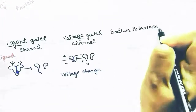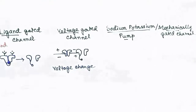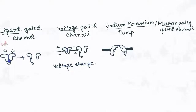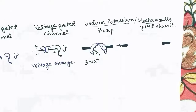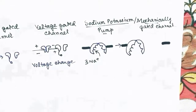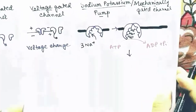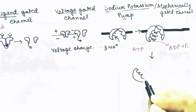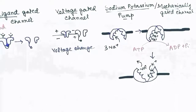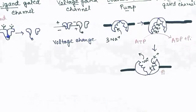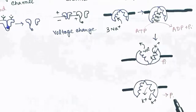The sodium-potassium pump, or mechanically gated channel, uses ATP and transfers 3 sodium ions to one side of the membrane in exchange for 2 potassium ions. Because it uses ATP, it works against the concentration gradient of the cell. Three sodiums attach, the pump flips over, sodiums are released on the other side, then potassium attaches and the pump flips over again.